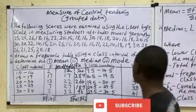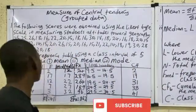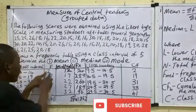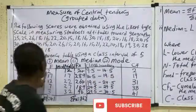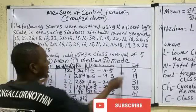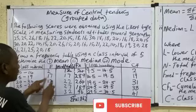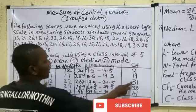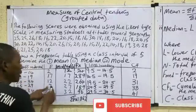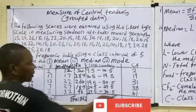Now find the cumulative frequency. Start with 2. Then 2+17=19. Then 19+12=31. Then 31+7=38. And finally 38+3=41. The cumulative frequency column is complete.